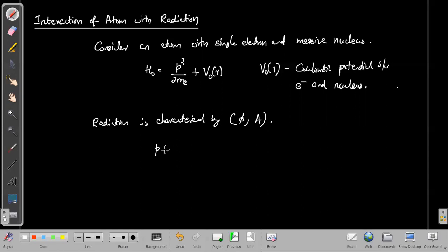The first change is that the momentum would change — momentum is no longer p; it becomes p + eA/c, because the field also carries some momentum. Apart from this change, we also have to introduce the scalar potential term into our Hamiltonian. These are the two changes we need to make.